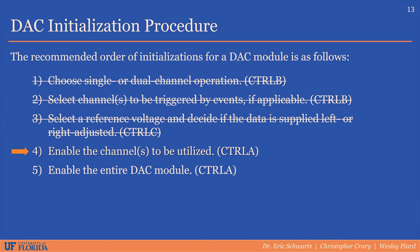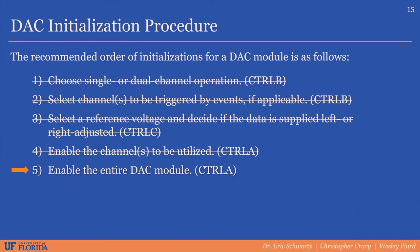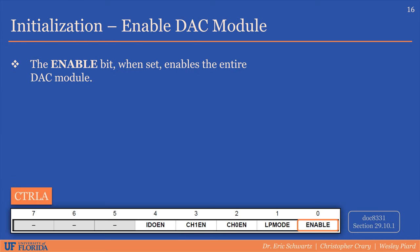After the DAC module has been fully configured, we have to actually enable the channels we're using. We can do this by setting the channel 1 and channel 0 enable bits, which will enable each channel respectively. Finally, we enable the entire DAC module overall by setting the enable bit within the control A register. Note that you have to be careful not to clear any bits such as channel 1 or channel 0 enable that you may have written previously.